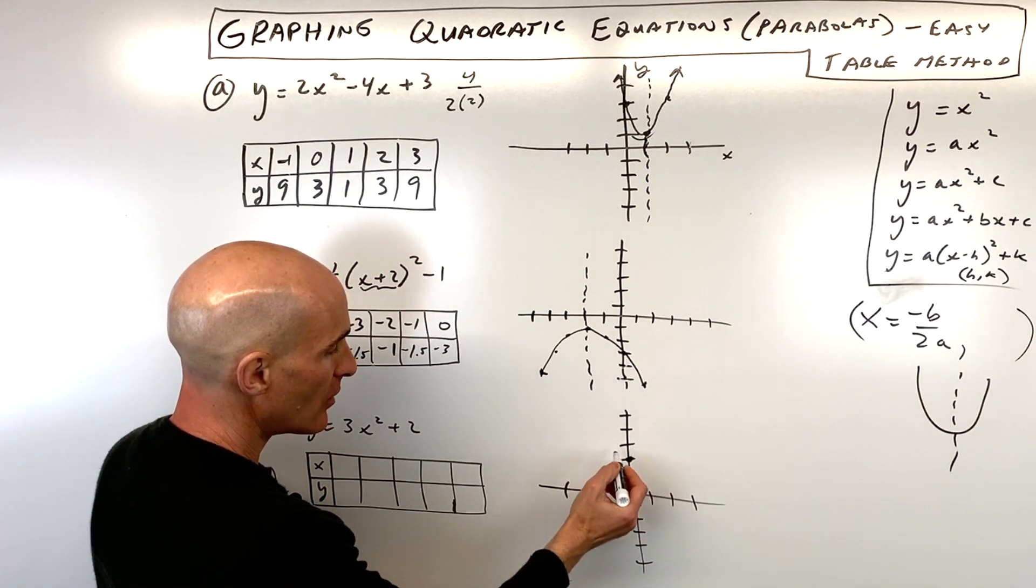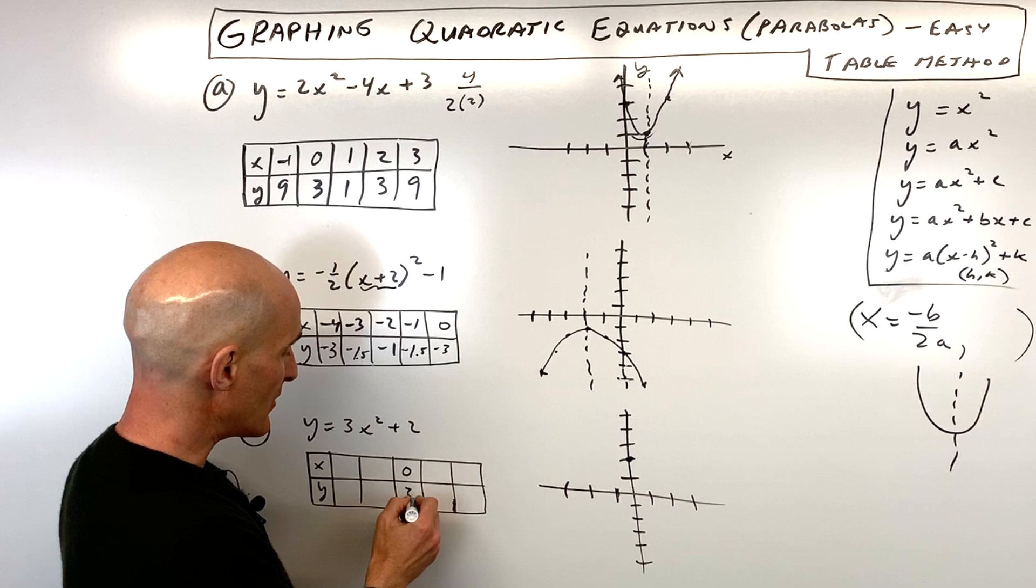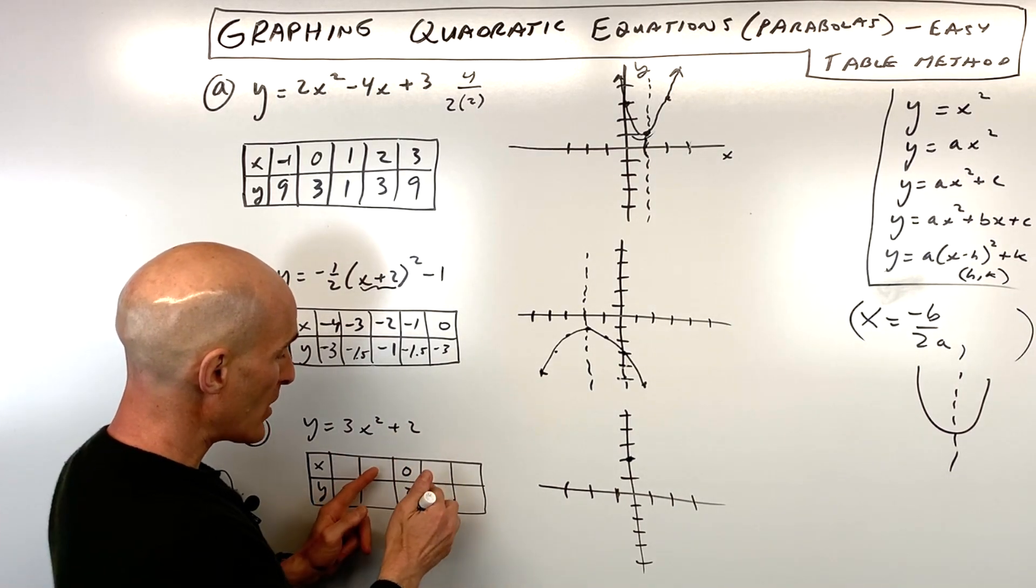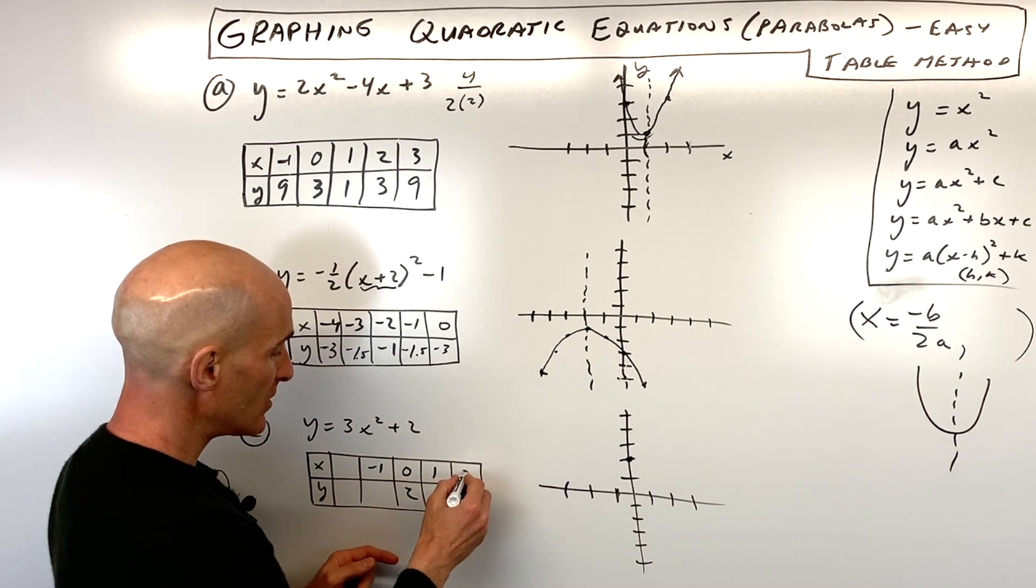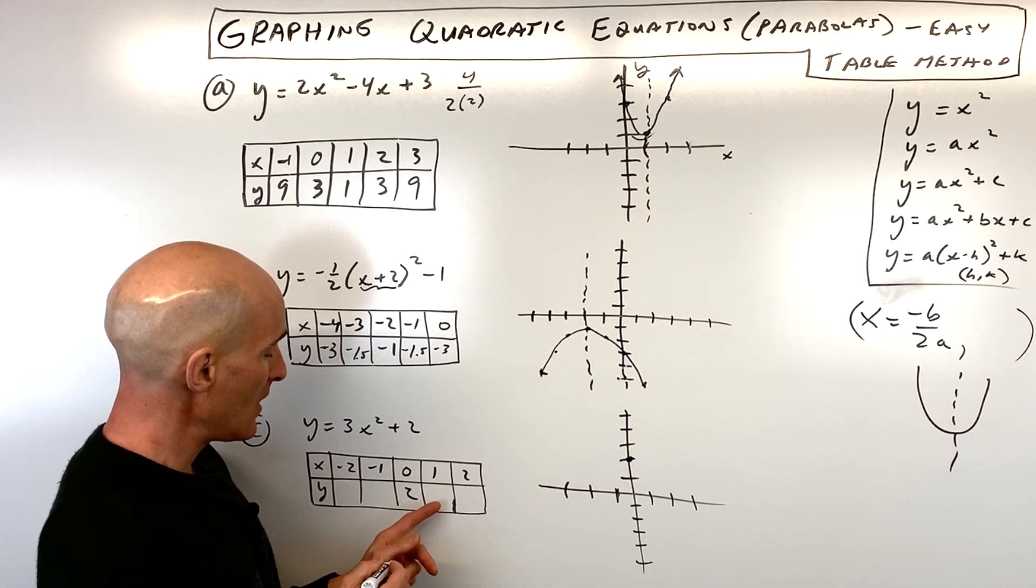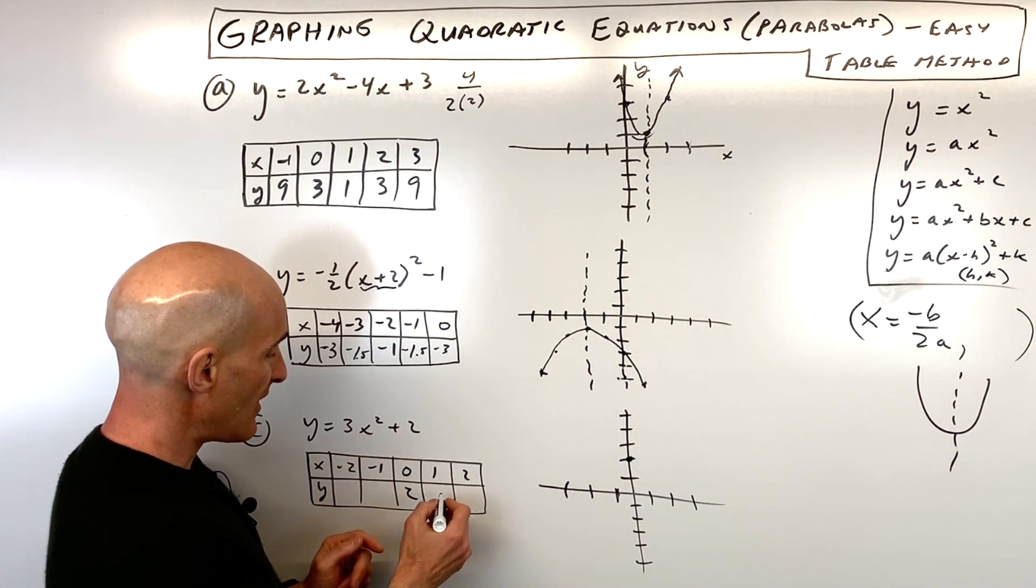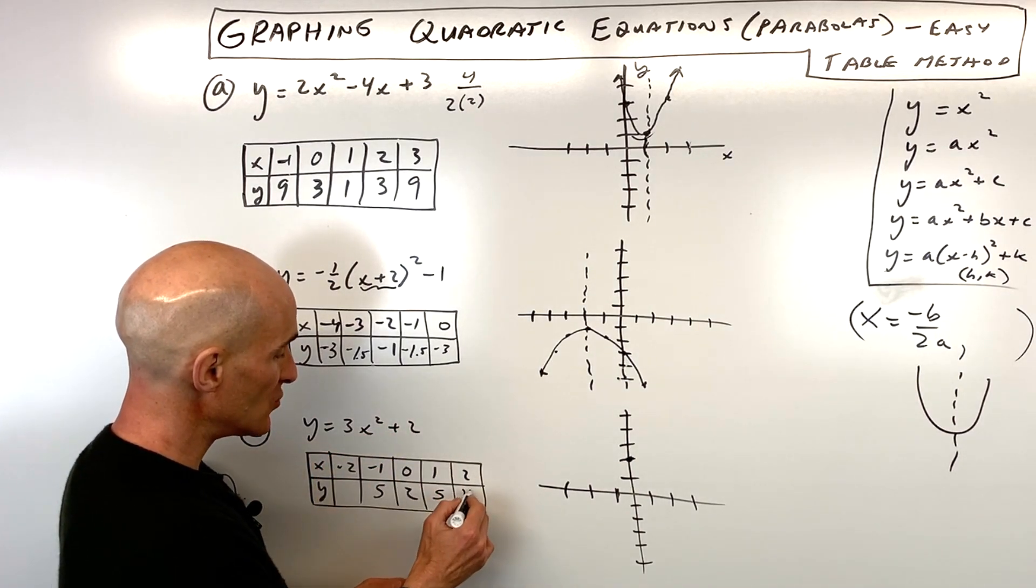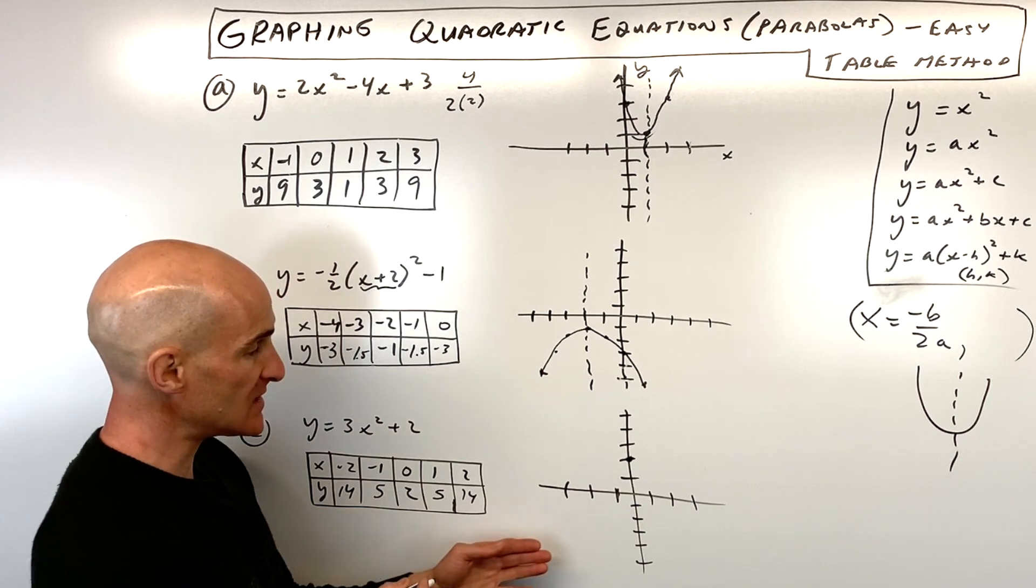So that means our vertex is just going to be shifted up 2 units from the origin. And our vertex is going to be right there at (0, 2). Notice I'm putting the vertex in the middle of the table here so that I can pick points on either side. 1 and negative 1, 2 and negative 2. If I put 1 in, I get 5. And if I put 2 in, I get 2 squared is 4 times 3 is 12 plus 2 is 14. So both of these are 14.